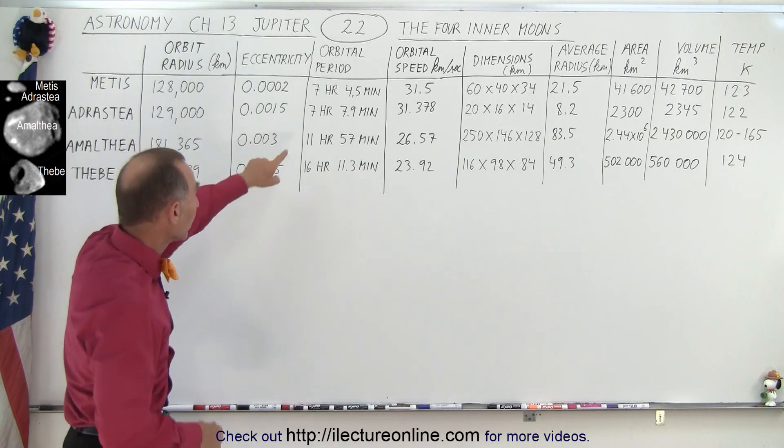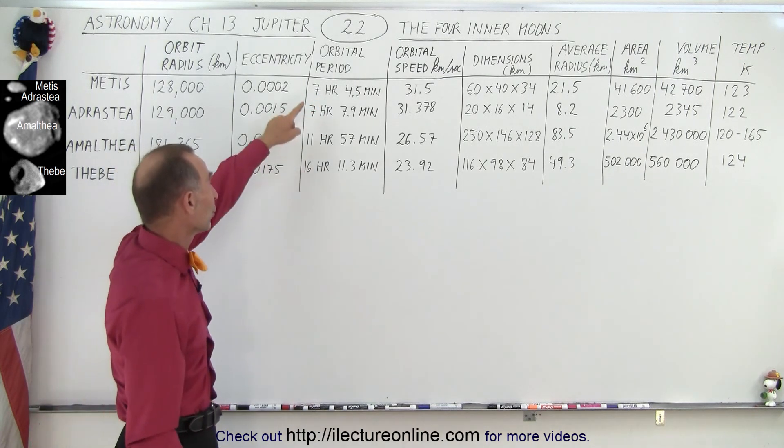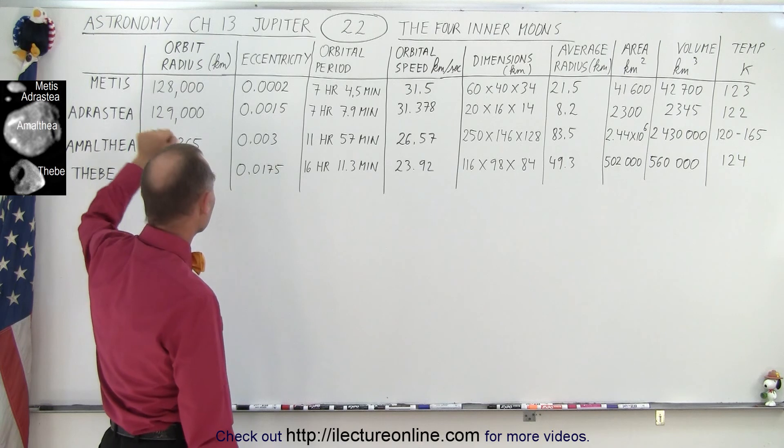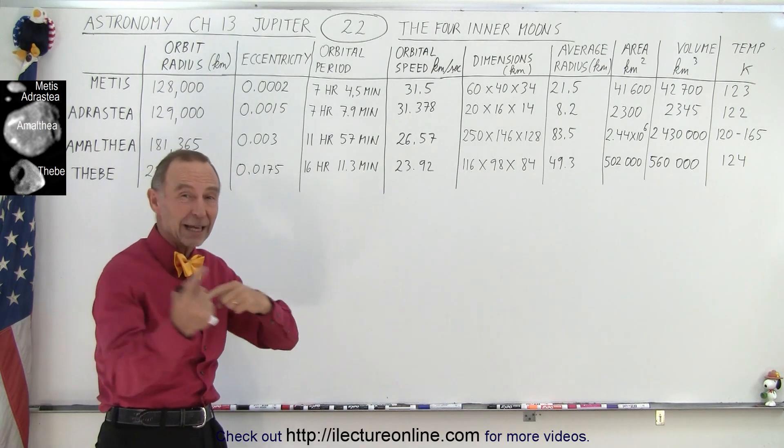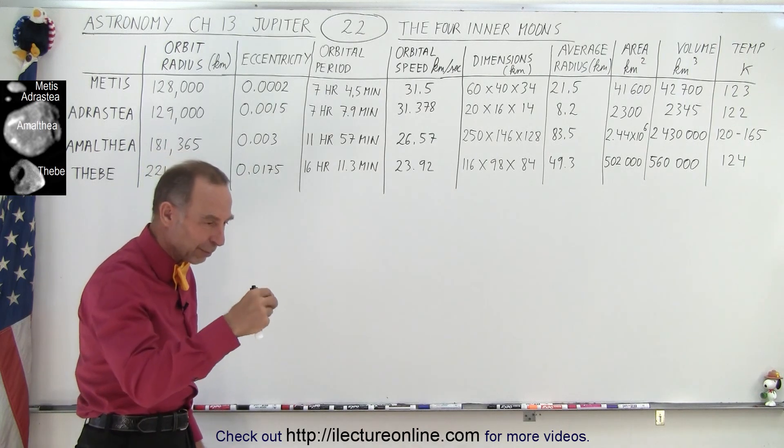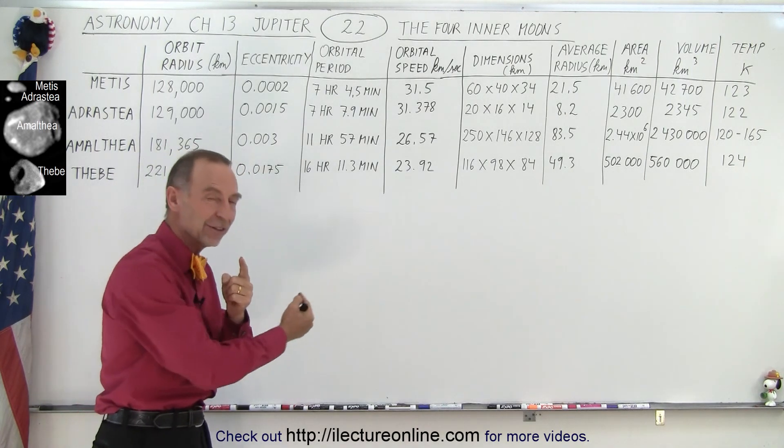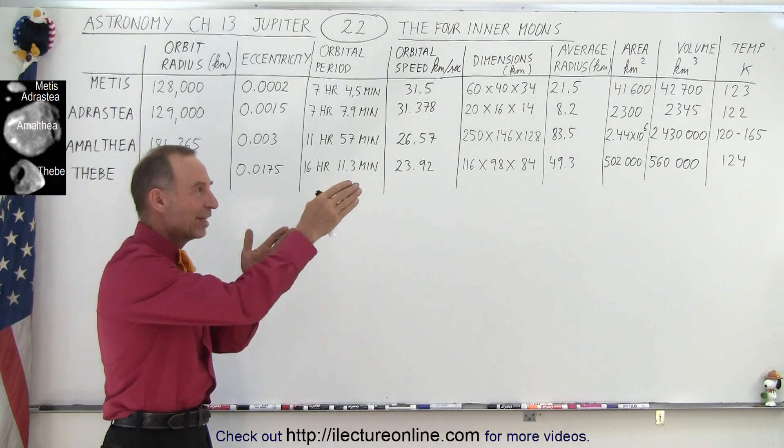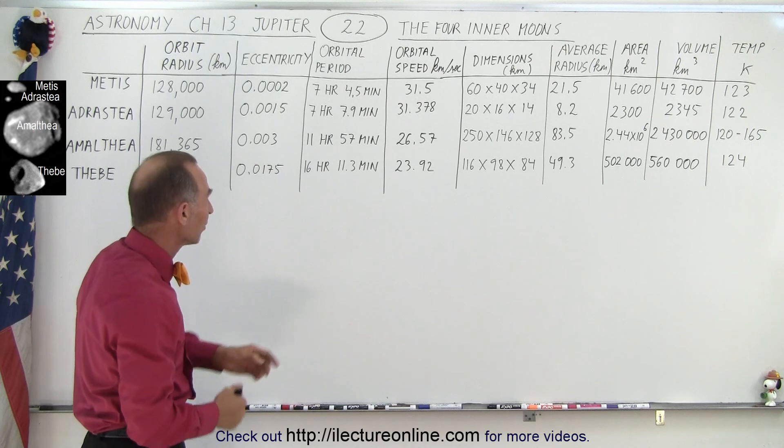Because of that, they orbit the planet in a very short amount of time. Matter of fact, the two inner moons, Metis and Adrastea, they travel around the planet faster than the planet rotates. So if you take a point on the planet and follow the rotation, the moons would actually travel faster than that. So the moons would actually get ahead of the viewpoint of where you're at. That's quite interesting.